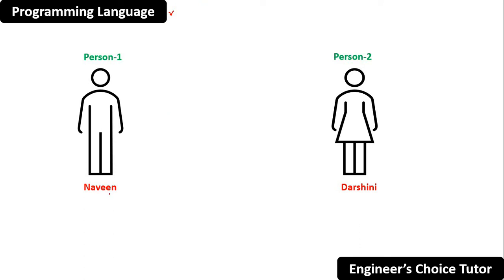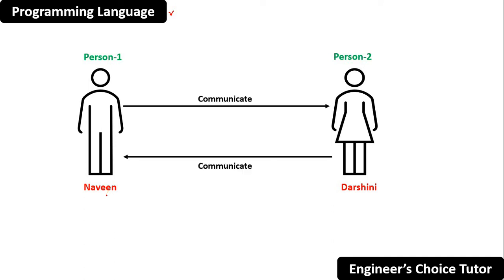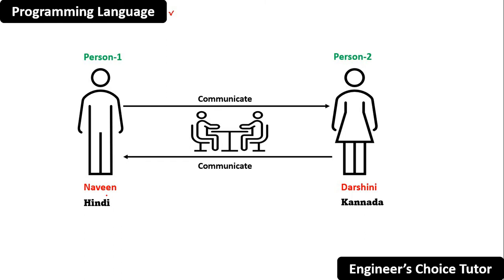The problem here is Naveen only knows Hindi language, and Darshini only knows Kannada language. So is it possible for them to communicate? The answer is no — it is not possible, because they both know different languages and they don't know a common language. If they don't know the common language, how can they interact with each other?